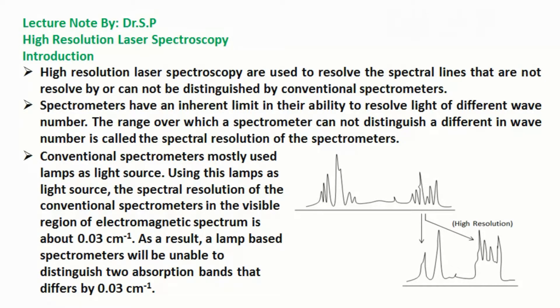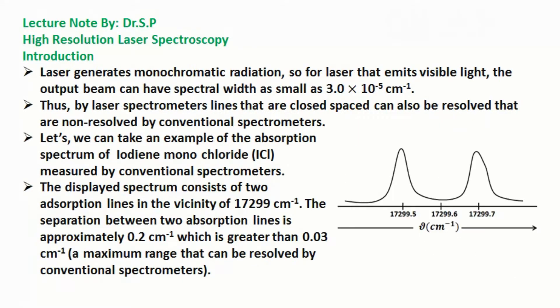a lamp-based spectrometer will be unable to distinguish two absorption bands that differ by 0.03 per cm. Laser generates monochromatic radiation, so for laser that emits visible light, the output beam can have spectral width as small as 3.0×10^-5 per cm.